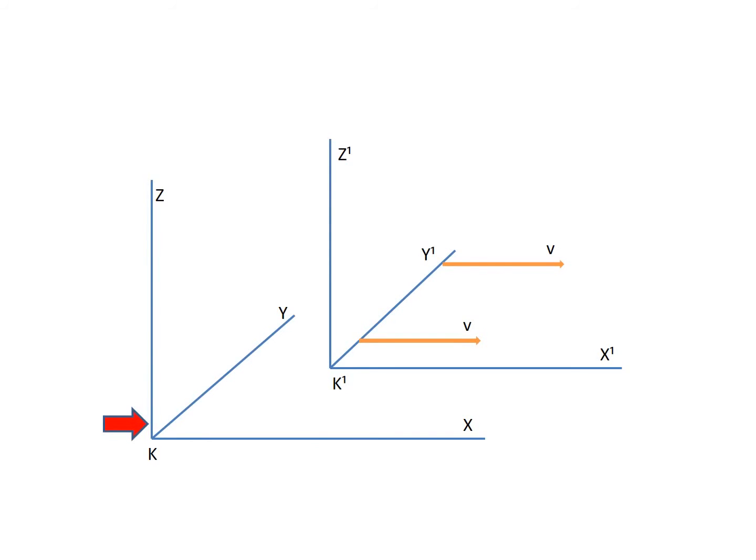The first coordinate system k, indicated by the red arrow, represents a railway embankment which is stationary with respect to the coordinate system k1. While the k1 coordinate system, indicated by the red arrow, represents a train traveling alongside the embankment with a uniform velocity equal to v relative to the embankment. Using these examples of coordinate systems, Einstein will conduct various thought experiments, the conclusions of which will lead us to his special theory of relativity.